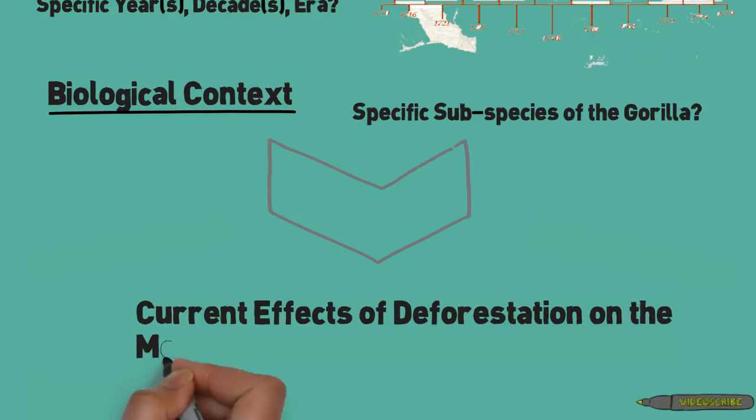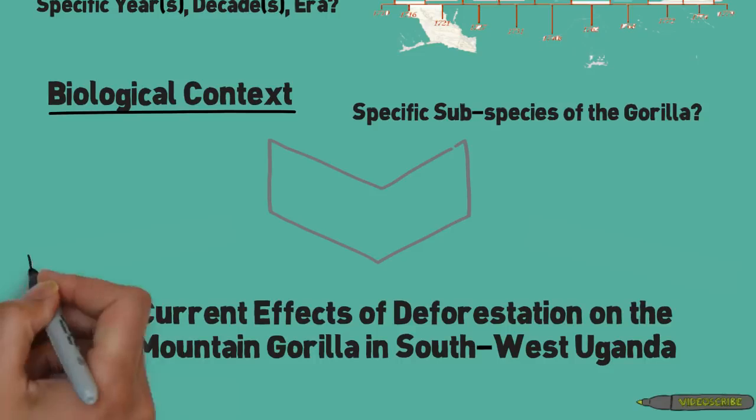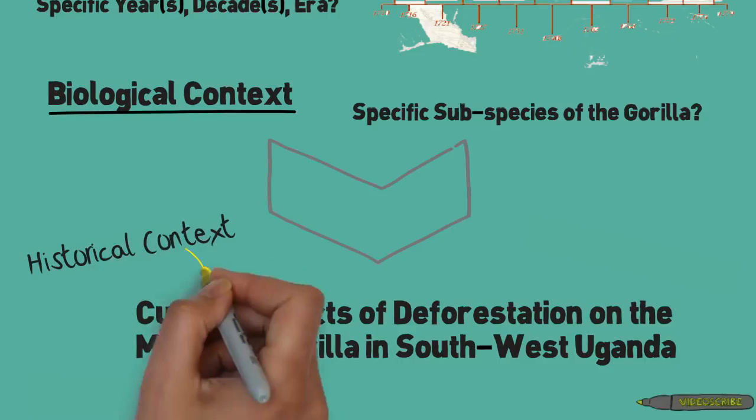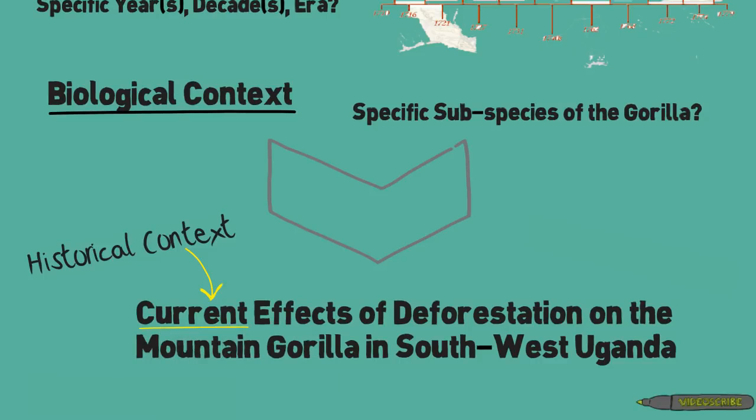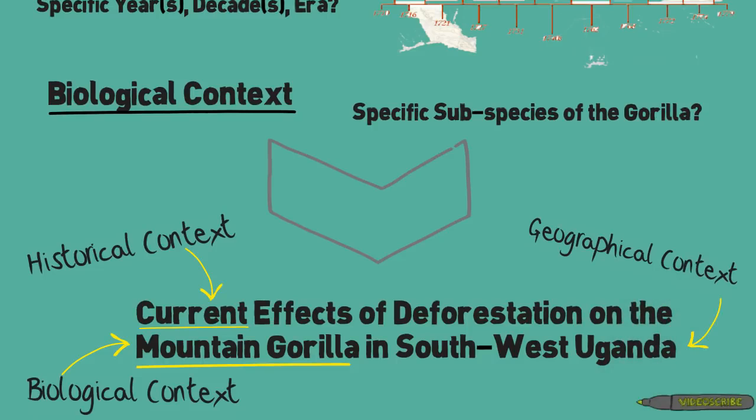Something like current effects of deforestation on the mountain gorilla in southwest Uganda. We thereby incorporate the historical context, the biological context, and the geographical context. Adding context truly is a great way of narrowing your topic.